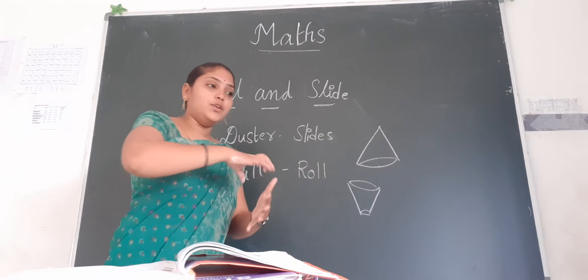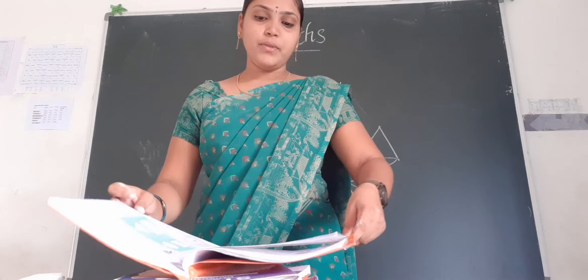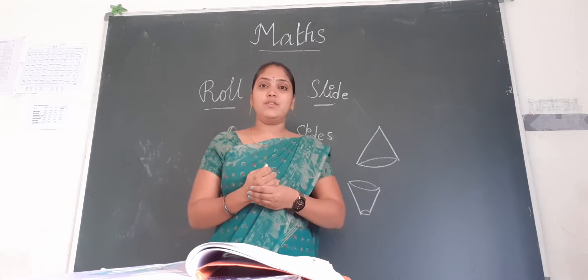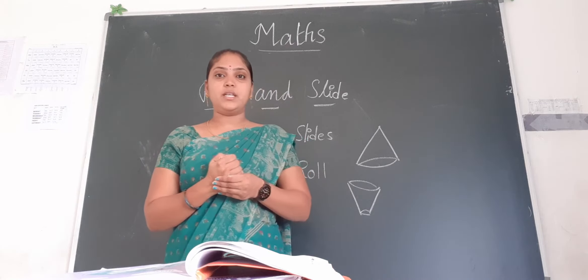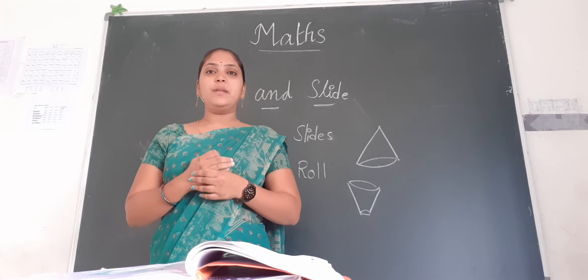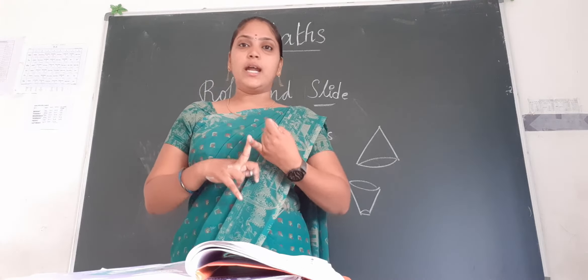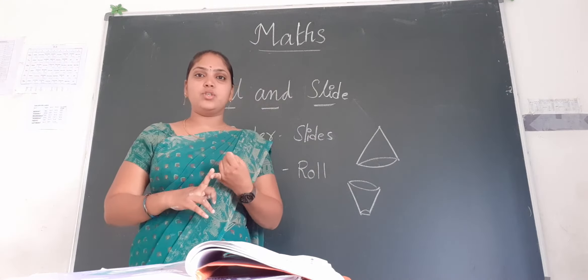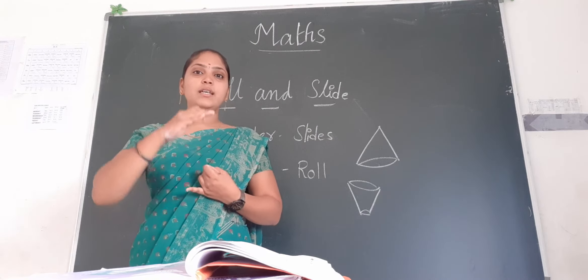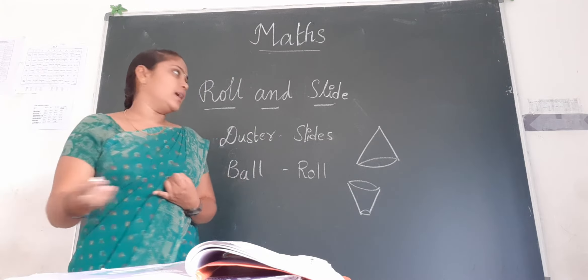So we discussed everything today as a revision class. The revision of the first chapter is now complete. What are the topics we learned in this chapter? First, we learned closed and open shapes — what are the closed shapes and what are the open shapes. We also learned the types of lines: straight lines and curved lines.